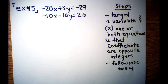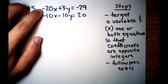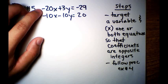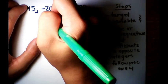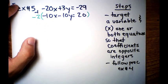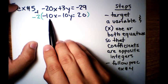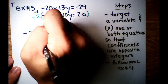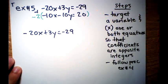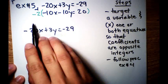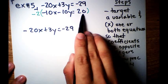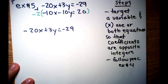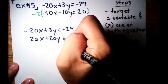My target variable is going to be x in this case. I see that this is negative 20 and I see that this is negative 10. In order for them to be opposite integers, I'm going to keep this negative 20 for the first equation. But on the second equation, I'm going to multiply everything by negative 2, because negative 2 times negative 10 is positive 20, and those are opposite integers. So I'm going to rewrite everything now. Negative 20x plus 3y is equal to negative 29. And for the second equation — some students forget to multiply the last number by negative 2, so you have to be careful. You need to multiply every single term. This gives us 20x plus 20y is equal to negative 40.